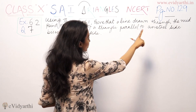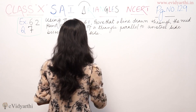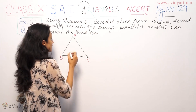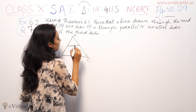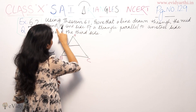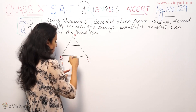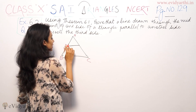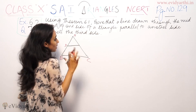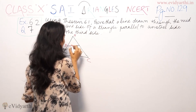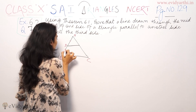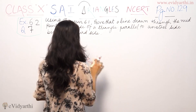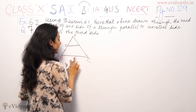A line is drawn to the midpoint of one side of the triangle. If we take D as the midpoint of side AB, that means AD is equal to DB. If we take the line to the other side, it is parallel to that other side.